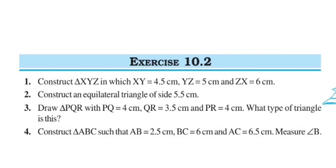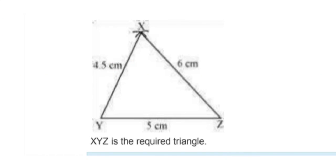Now see Exercise 10.2, Question 1: Construct triangle XYZ in which XY is equal to 4.5 centimeters, YZ is equal to 5 centimeters, and ZX is equal to 6 centimeters. See the steps: first draw a line segment YZ of length 5 centimeters. Taking point Y as center, draw an arc of 4.5 centimeter radius. Taking point Z as center, draw an arc of 6 centimeter radius. Mark the point of intersection of the arcs as X. Now join XY and XZ. So XYZ is the required triangle.